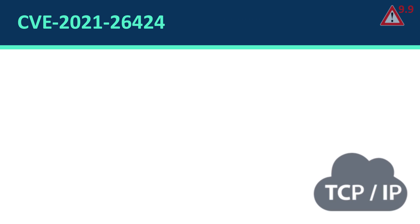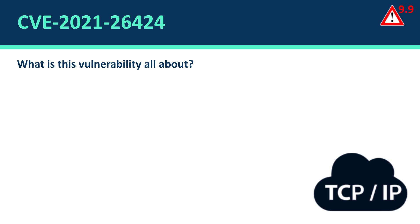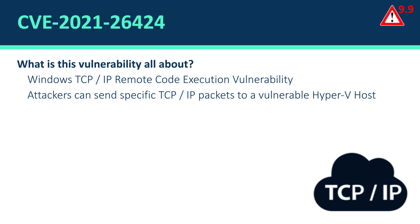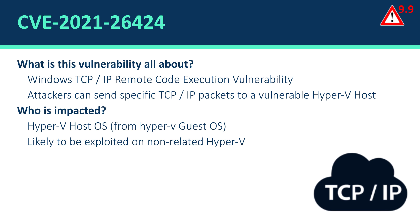The second vulnerability is related to the TCP/IP stack protocol and it is very critical, with a severity score of 9.9. It is most relevant for Hyper-V infrastructure but is likely to be exploited on non-Hyper-V environments as well, so it is very important to prioritize it. An attacker can send a specially crafted TCP/IP packet to a vulnerable Hyper-V host.